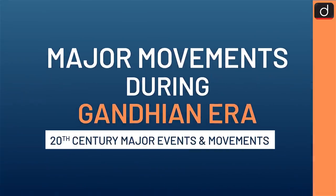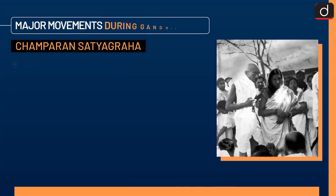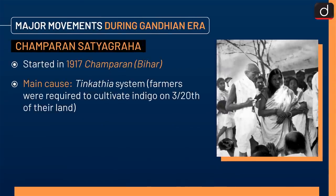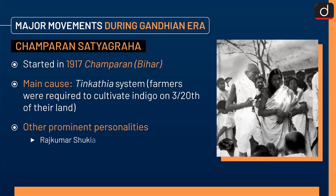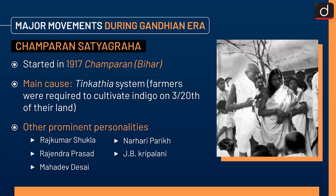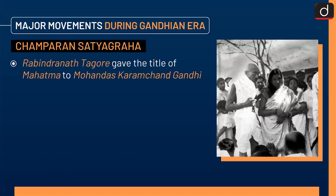Now moving on to major movements during the Gandhian era. First is the Champaran Satyagraha, which started in 1917 in Champaran, Bihar. The main cause was the Tinkathia system, under which farmers were required to cultivate indigo on 3/20th of their land. Other prominent personalities were Rajkumar Shukla, Rajendra Prasad, Mahadev Desai, Narhari Parikh, and J.B. Kripalani. Rabindranath Tagore gave the title of Mahatma to Mohandas Karamchand Gandhi.